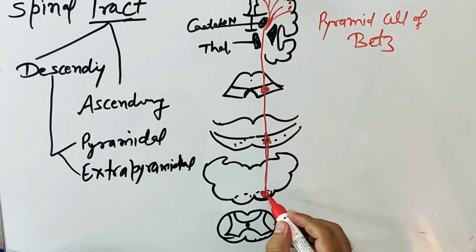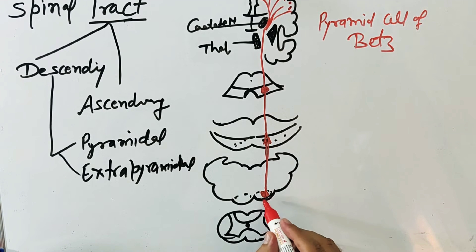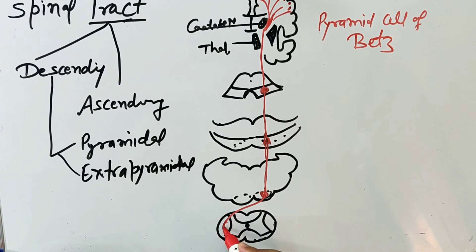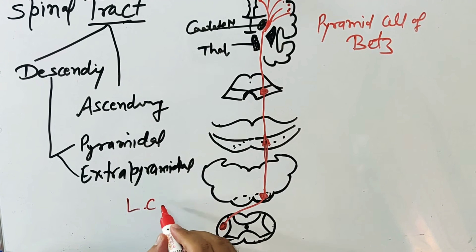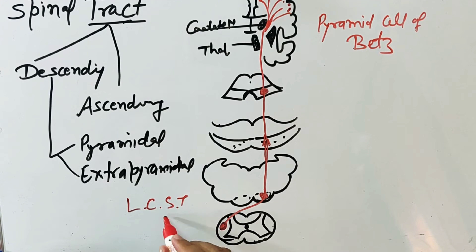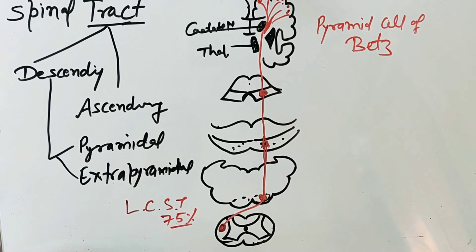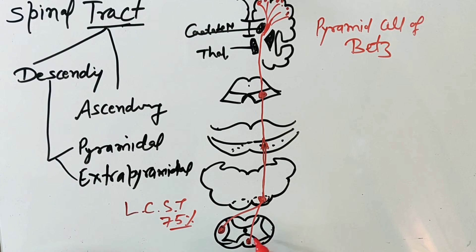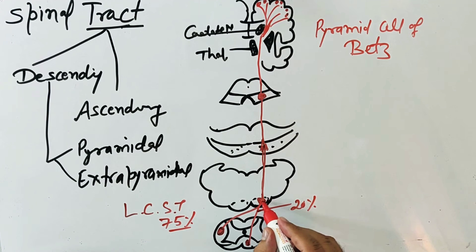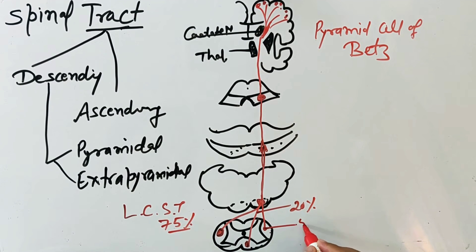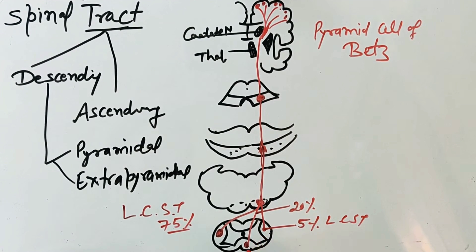It then passes through the pyramid, and at the level of pyramidal decussation, about 75% of fibers cross to the opposite side into the lateral corticospinal tract. About 20% of fibers pass through the anterior corticospinal tract on the same side, and about 5% of fibers pass through the ipsilateral lateral corticospinal tract.